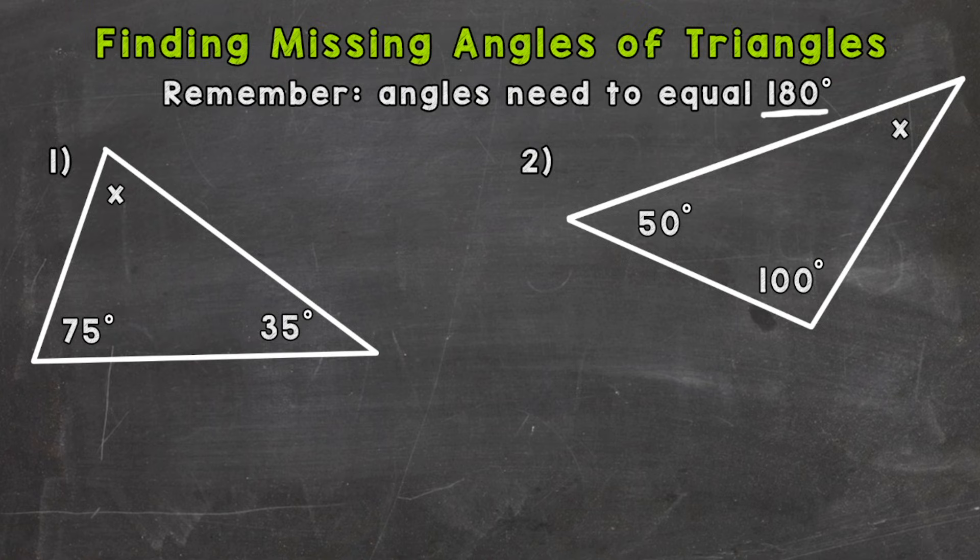So let's jump right into number one here and see how we find a missing angle. This X is our missing piece within that triangle, our missing angle measure. The first thing we need to do is take a look at what we are given, and we're given 75 degrees and 35 degrees.